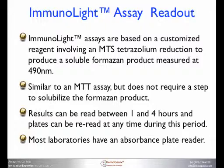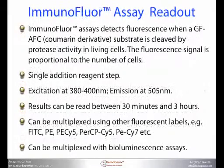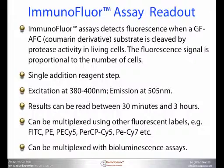Most laboratories have an absorbance or colorimetric plate reader. The ImmunoFloor assays detect fluorescence when a GFAFC substrate — a coumarin derivative — is cleaved by protease activity in living cells. The fluorescent signal produced is proportional to the number of cells. It is a single-addition reagent step. The excitation is between 380 and 400 nanometers and the emission is read at 505 nanometers. Results can be read between 30 minutes and three hours, and the assay can be multiplexed using other fluorescent labels to home in on specific immune cell populations, as well as with bioluminescence assays.